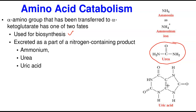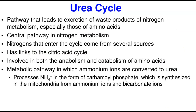Now we'll look at the urea cycle — the pathway that leads to excretion of waste products of nitrogen metabolism, especially from amino acids. The urea cycle handles excess amino acids that cannot be stored. It is the central part of nitrogen metabolism, and nitrogen can enter from several sources. The cycle is linked to the citric acid cycle — which is anaplerotic — and is involved in both the breakdown and synthesis of amino acids.